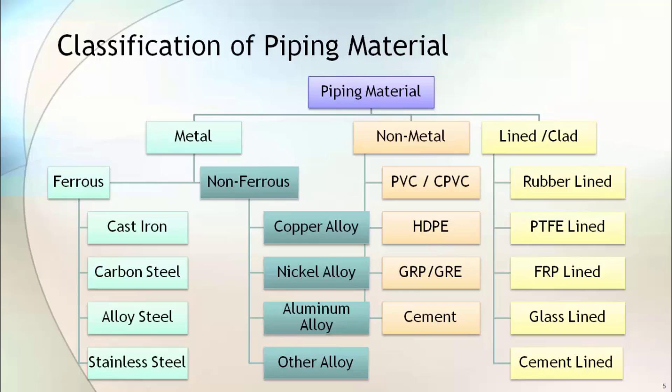Under the non-metal category, materials such as PVC, CPVC, HDPE, GRE, GRP, and cement pipe are included. Whereas lined or clad material is a composite material. Non-metal materials are used as a lining material with ferrous material. Normally used lining materials are rubber, PTFE, FRP, glass, and cement.